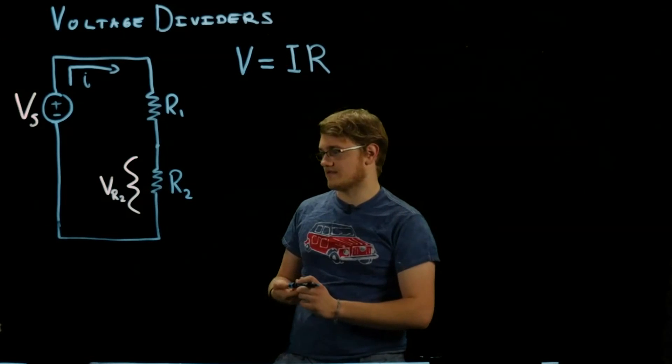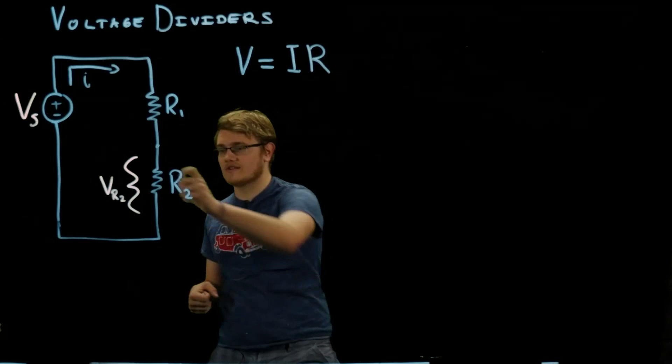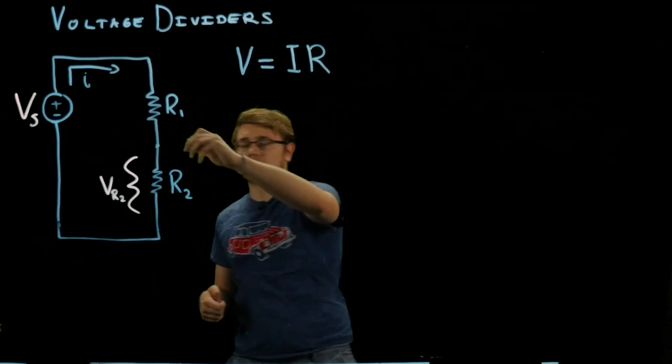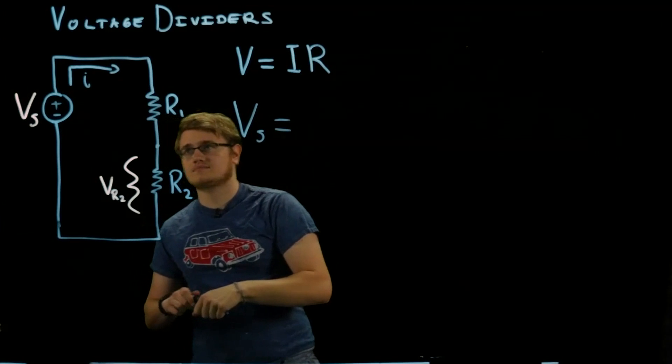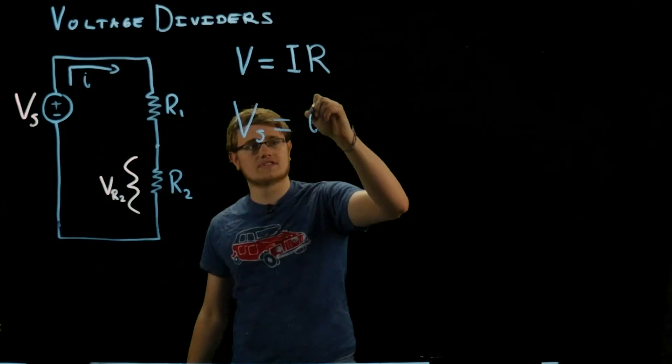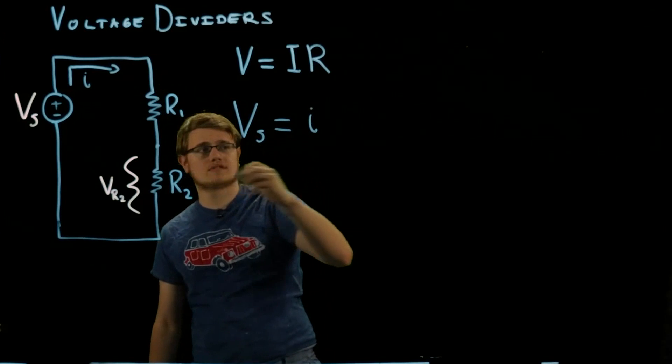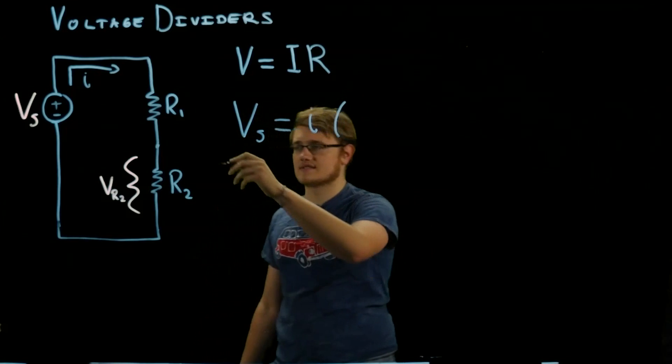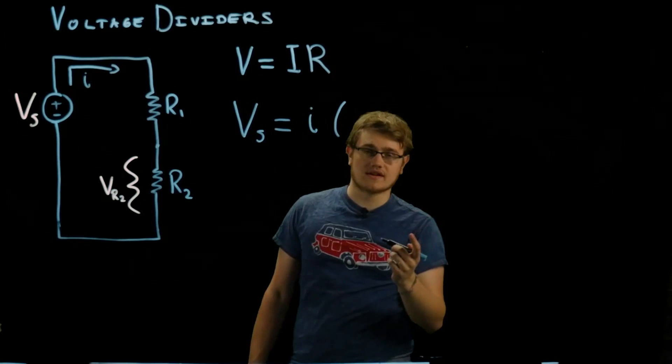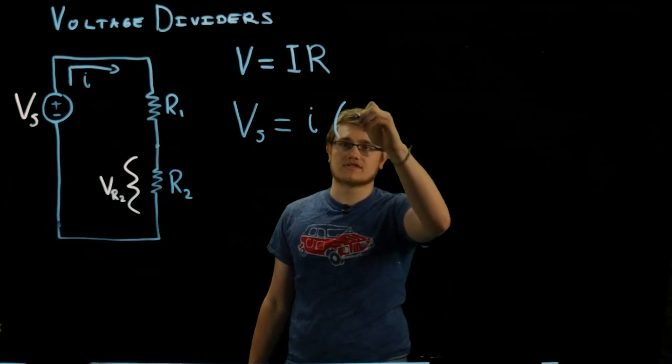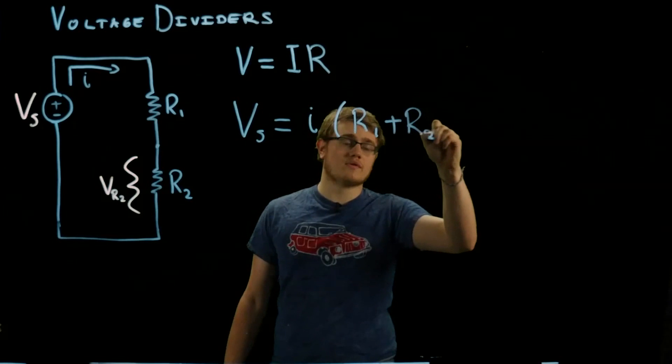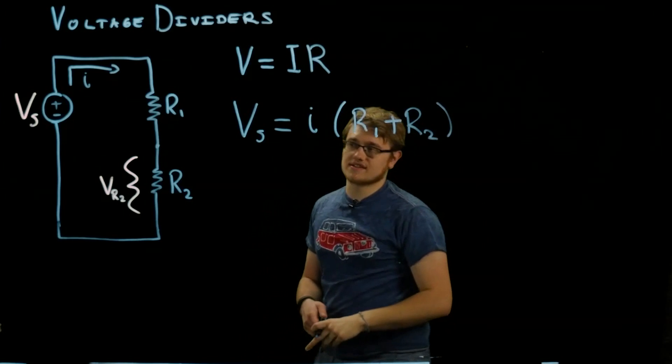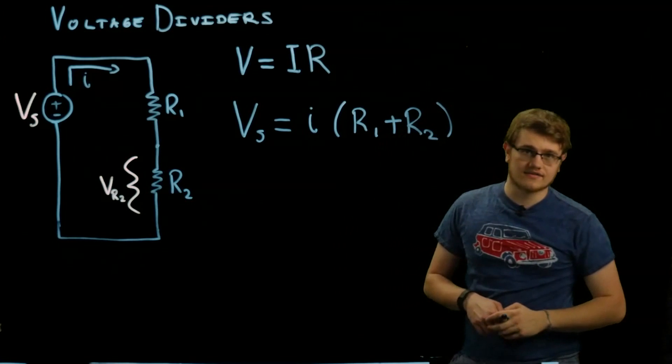We want to find V, but we know Vs. Vs equals I, which is the current going through both of these, times the resistance. The equivalent resistance of those two resistors is just R1 plus R2, because resistors in series just add together for equivalent resistance.